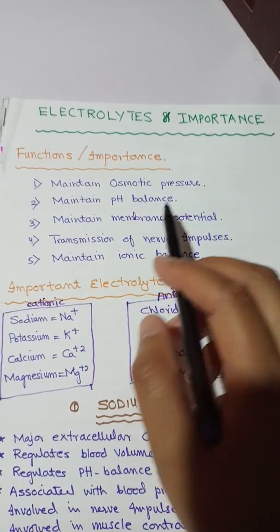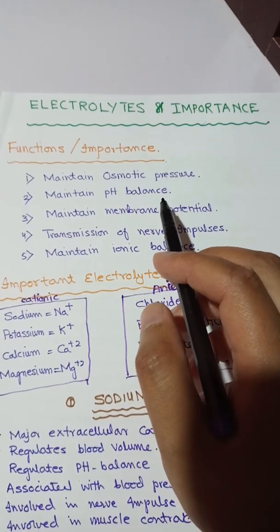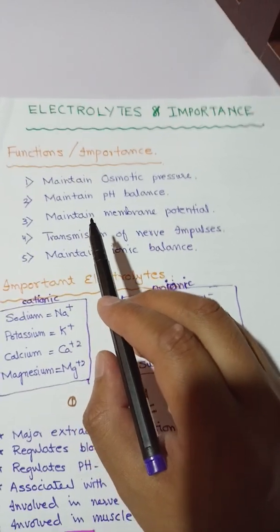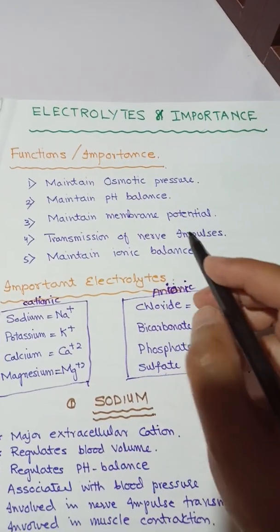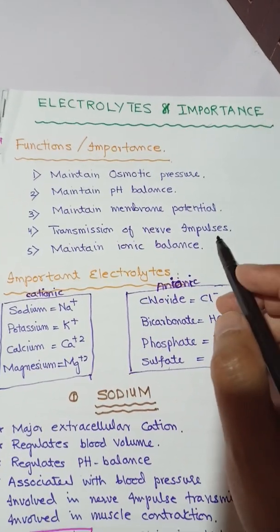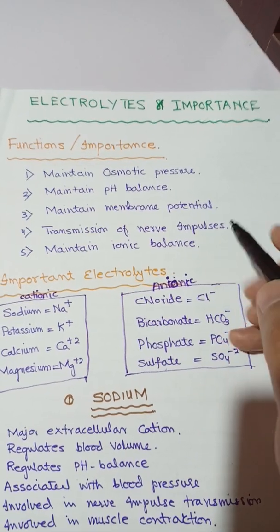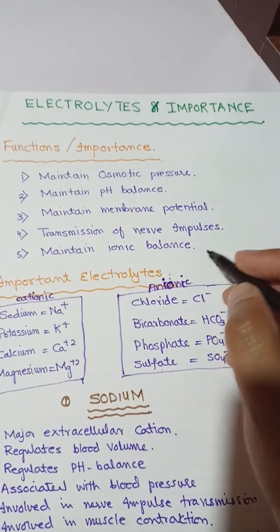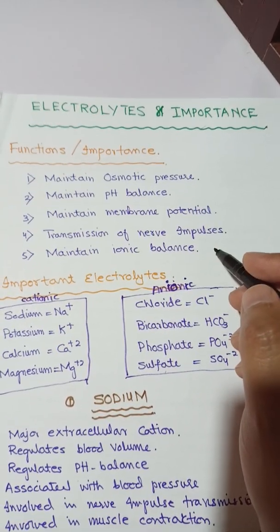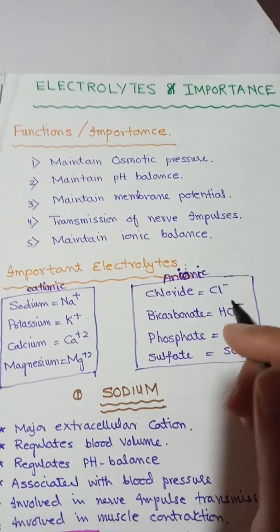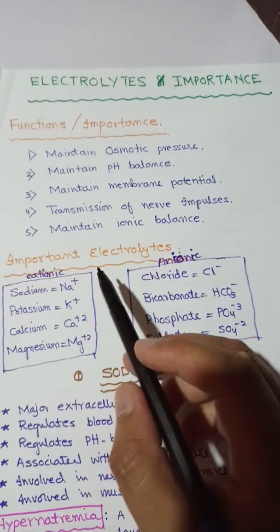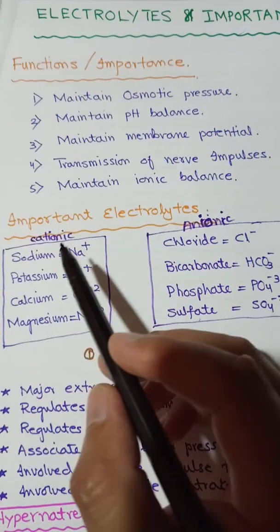The second function is to maintain pH inside living organisms; it is also important to maintain normal function of the body. The third function is to maintain membrane potential and the transmission of nerve impulses. They are also important to maintain ionic balance inside the body and are involved in contraction or relaxation of different muscles, like smooth muscles or skeletal muscles.